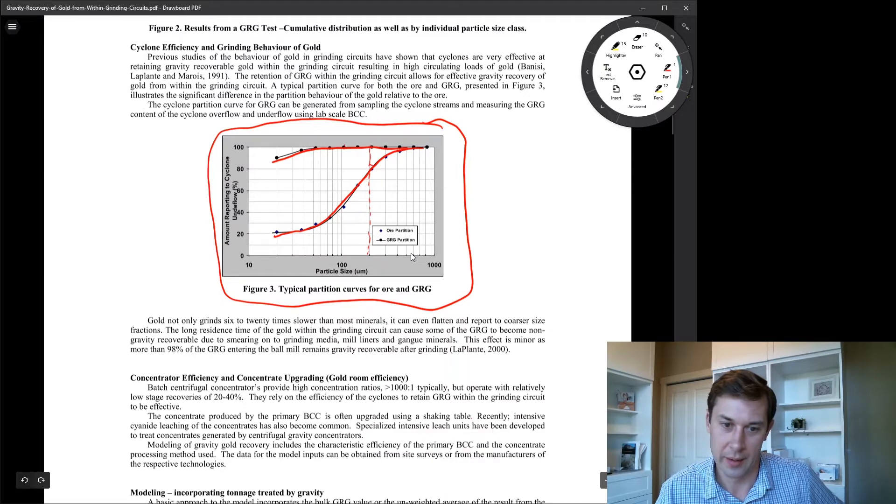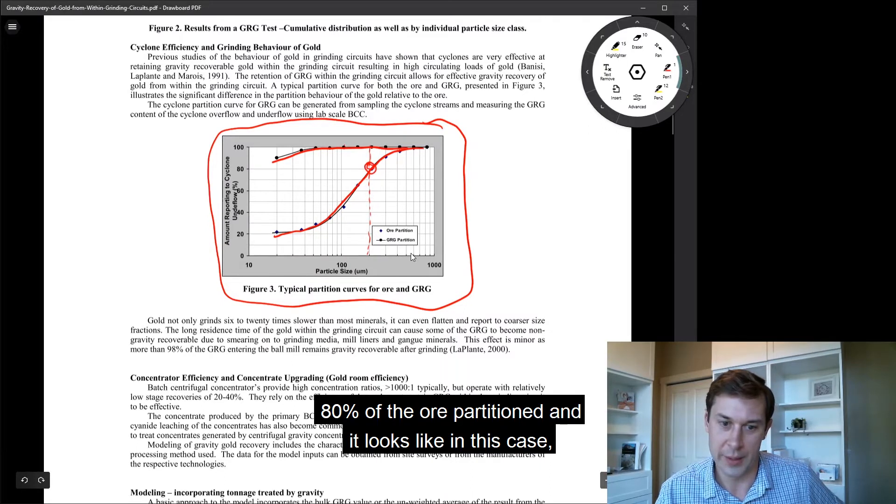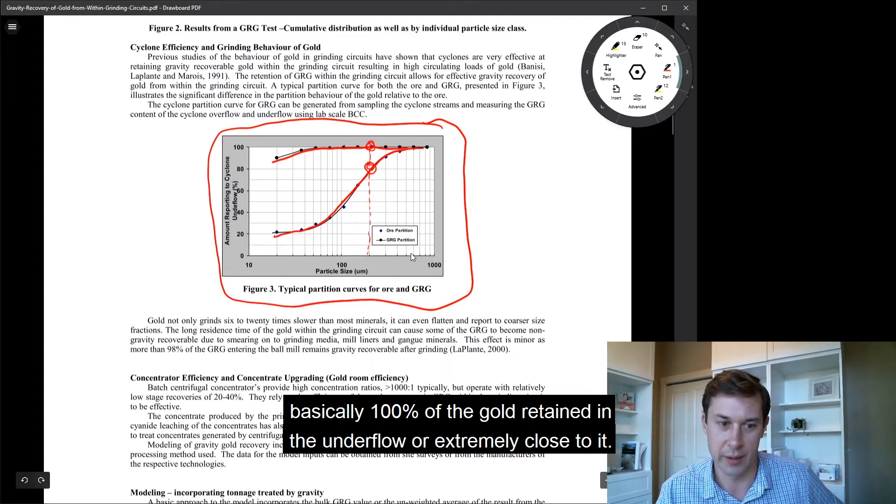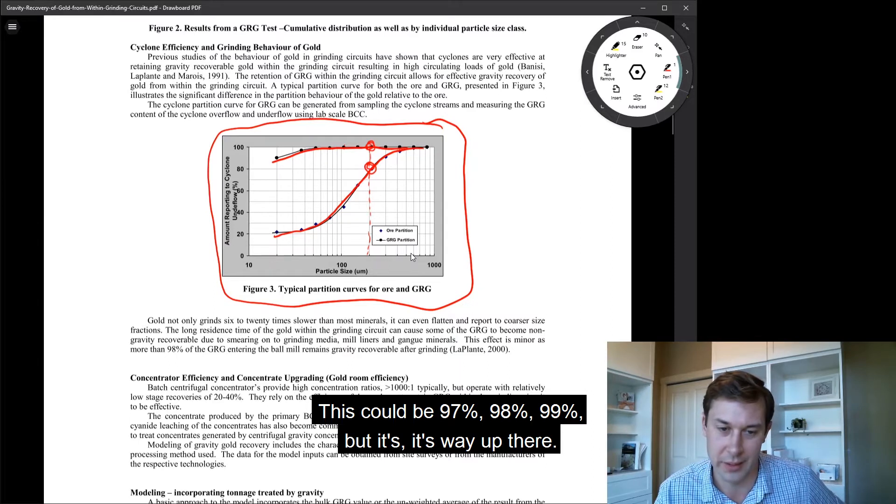So we're going to get 80% of the OR partitioned. And it looks like in this case, basically 100% of the gold retained in the underflow, or extremely close to it. This could be 97, 98, 99%, but it's way up there.